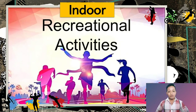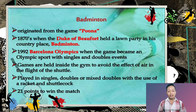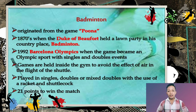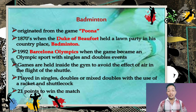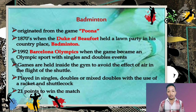Now let's proceed to the two types of recreational activities. The first is indoor recreational activity. An example is badminton, which originated from the game 'poona' in the 1870s when the Duke of Beaufort held a party at his country place named Badminton. In the 1992 Barcelona Olympics it became an Olympic sport with singles and doubles events. It is played inside the gym to avoid air effects on the shuttlecock, using a racket and shuttlecock, with a total score of 21 points to win.